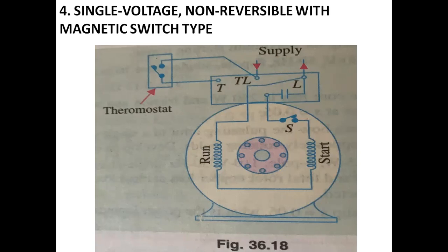Now, single voltage non-reversible magnetic switch type. These motors are also commonly used in refrigerators where it is not possible to use a centrifugal switch. The circuit diagram is similar to the one shown before. As the application needs only one direction of rotation, these motors are not connected for reversing — only for developing in one direction.